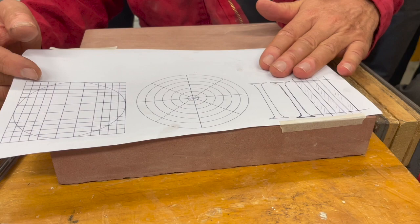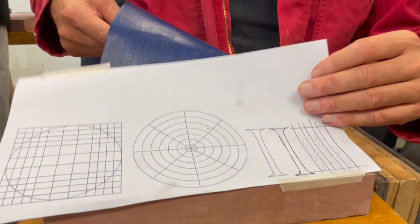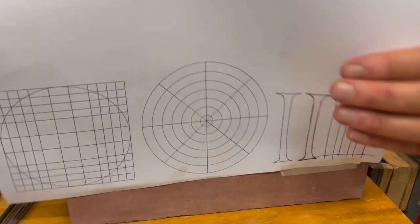You've got your paper template, you transfer it with carbon paper underneath. It's quite useful to tape it just on one side so you can always go back if something doesn't show.